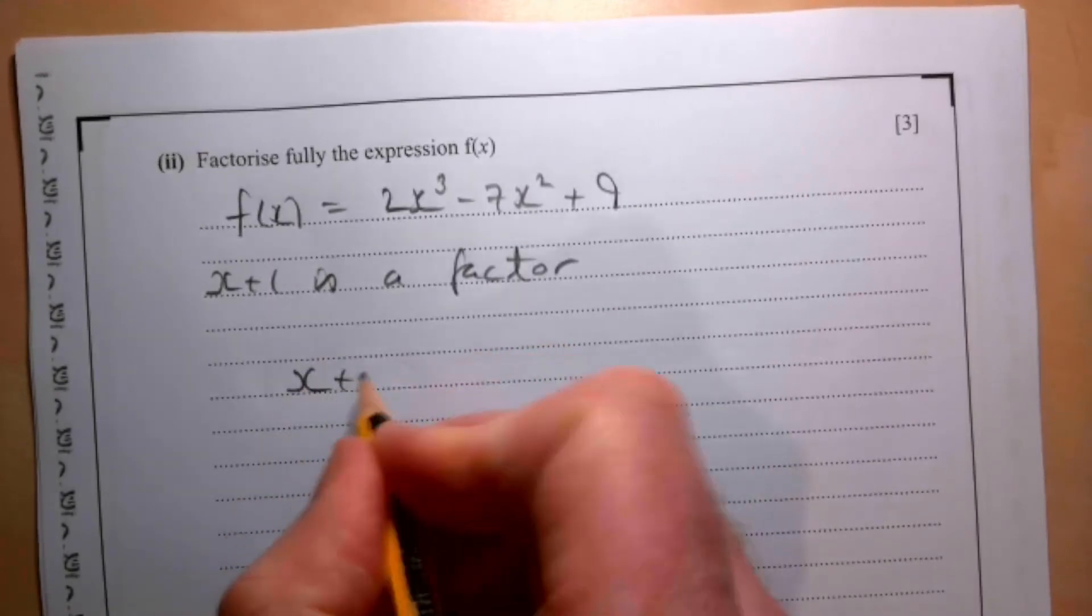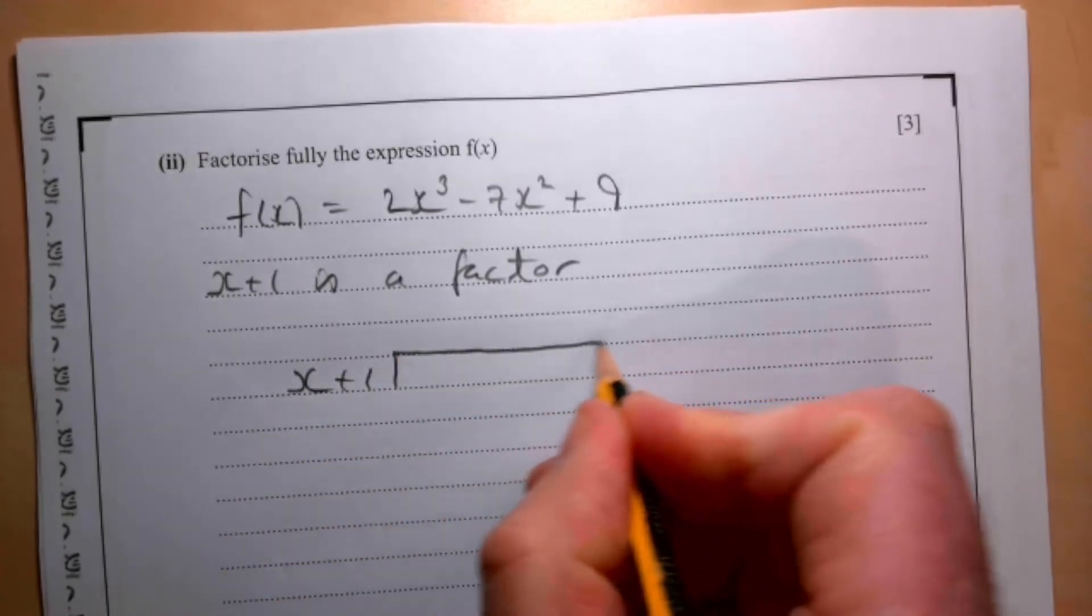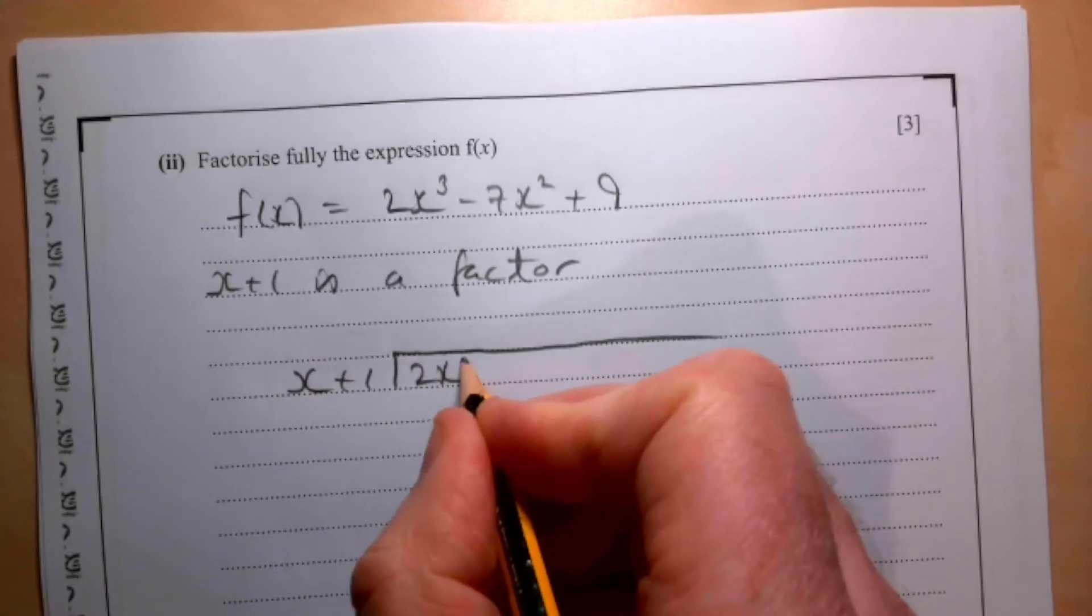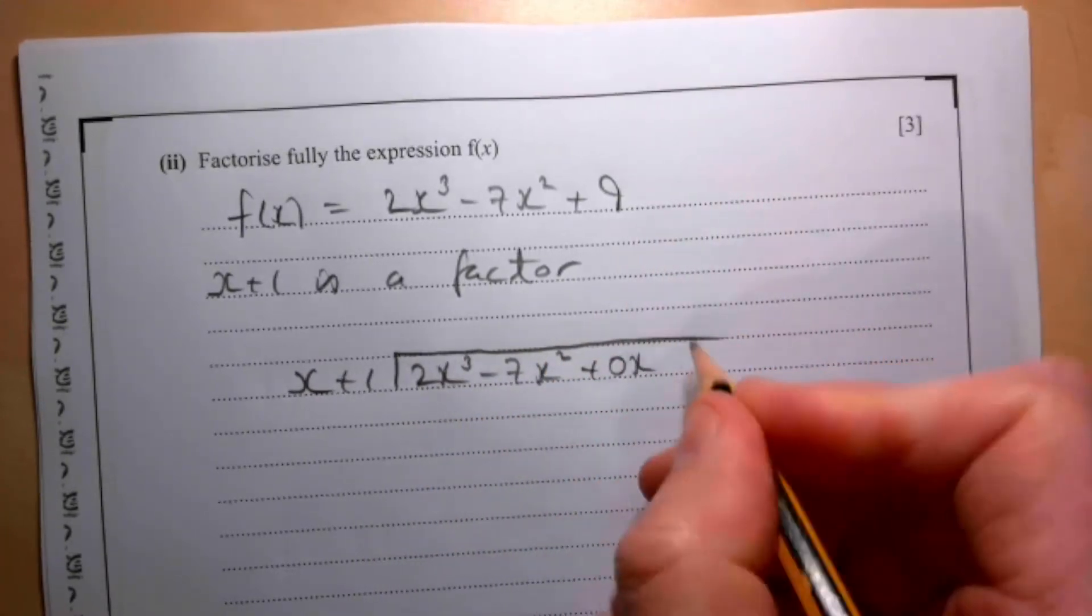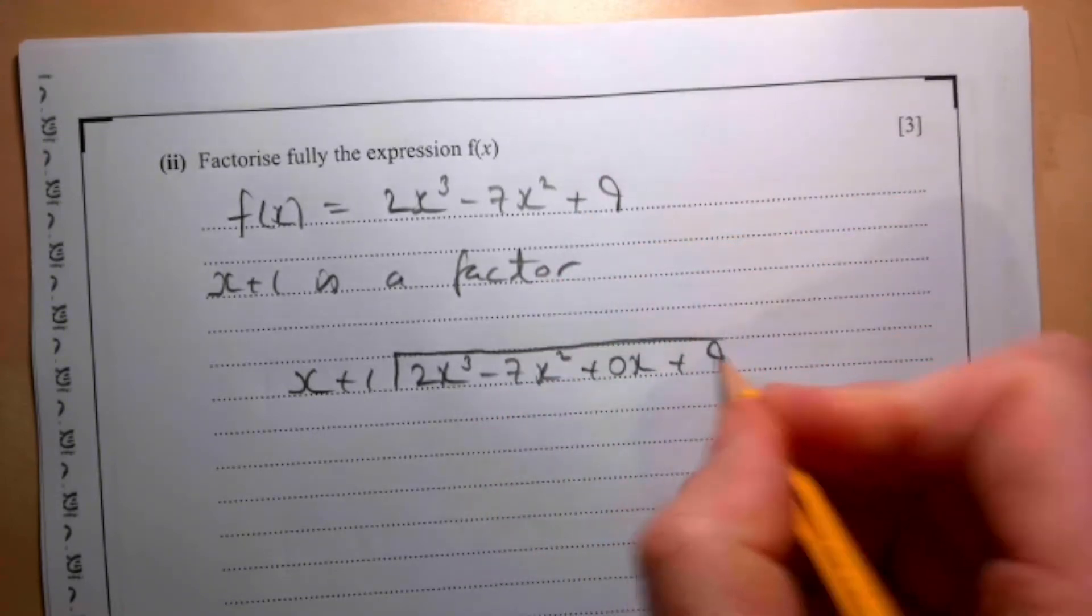I can just do my long division straight away. So we know x + 1 is a factor, so I'm going to do my long division now. Be careful here: 2x³ - 7x² + 0x + 9. Remember the x term there.